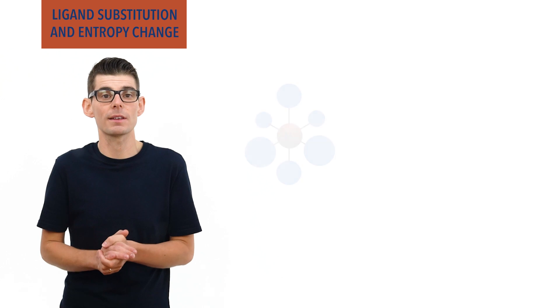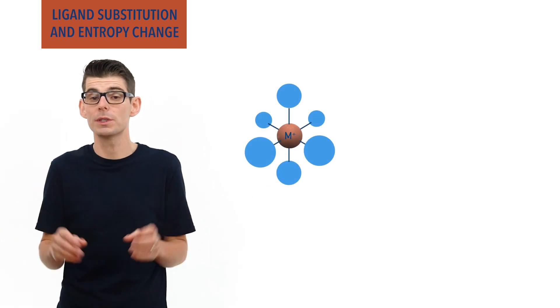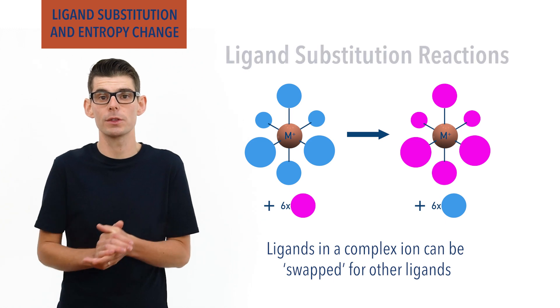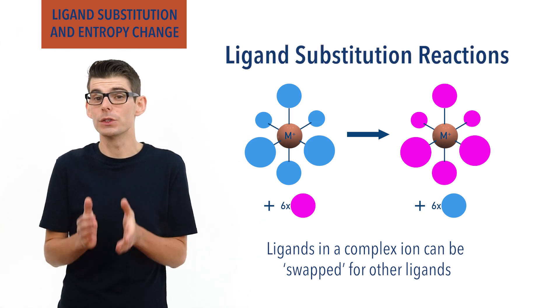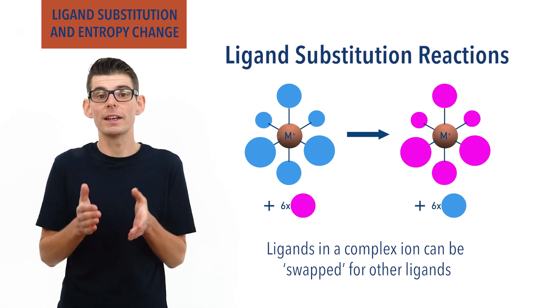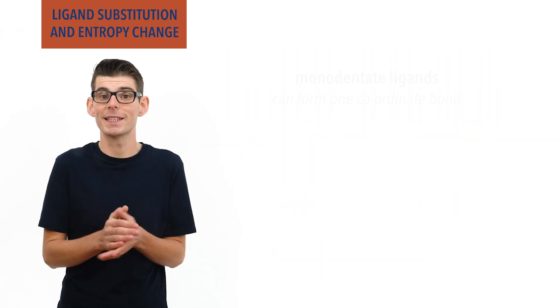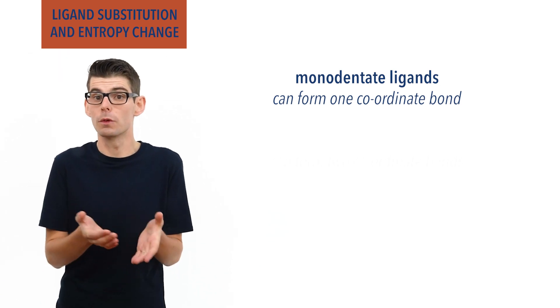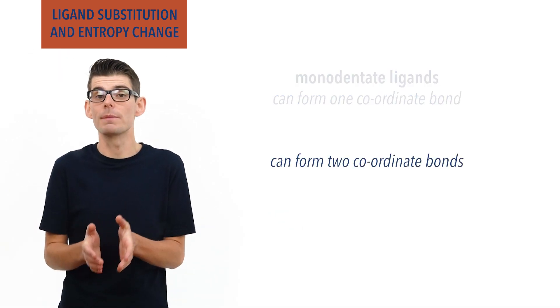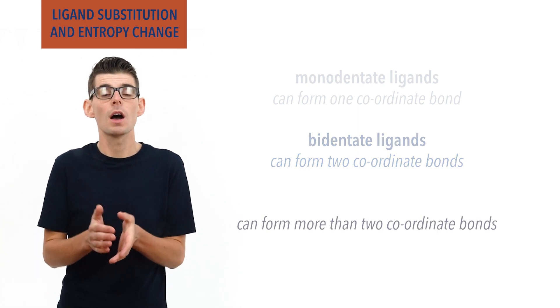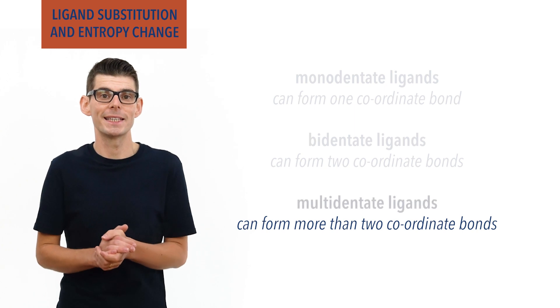Recap done? Let's go! The ligands in a complex ion can be swapped or substituted with other ligands in what are called ligand substitution reactions. Most ligands can only form one coordinate bond to a metal ion — these are described as monodentate ligands. Some, however, can form more than this. Ligands that can form two coordinate bonds are described as bidentate ligands, and ligands that can form more than two are described as multidentate ligands.